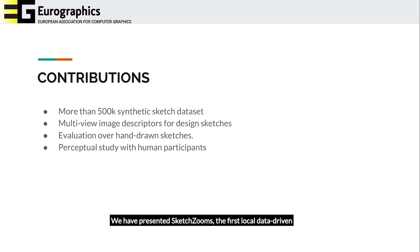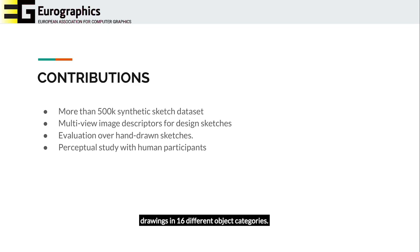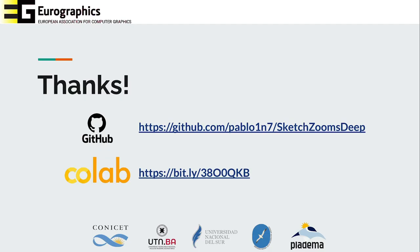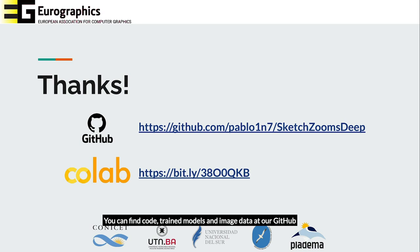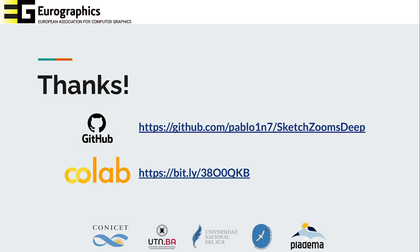We have presented SketchZooms, the first local data-driven descriptor to compute correspondences in sketches. Approaching this task was previously unfeasible due to a limited amount of available data. We put together a vast collection of synthetic line drawings in 16 different object categories. More importantly, our learned characteristics generalized to a broader spectrum of sketched styles and found correspondences similar to those found by humans. You can find code, trained models, and image data at our GitHub repository. We also added a notebook in Google Colab so SketchZooms can be tested without the need to retrain. Thank you for watching.